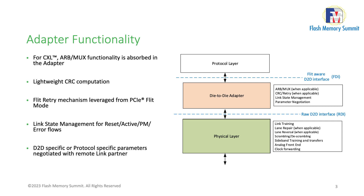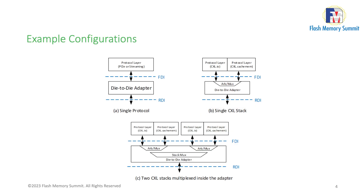We have a state machine hierarchy defined in the specification to take care of things like link bring-up, power management, error flows, and interaction with software in terms of disabling the link. One of the important roles of the adapter is to do parameter negotiation with the remote link partner, so that it can figure out which protocol and which flit format it wants to operate in. The first example configuration in UCIE 1.0 is a single protocol layer talking to the die-to-die adapter — that could be a PCIe application or a streaming protocol.